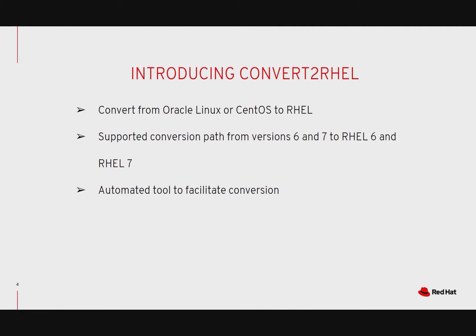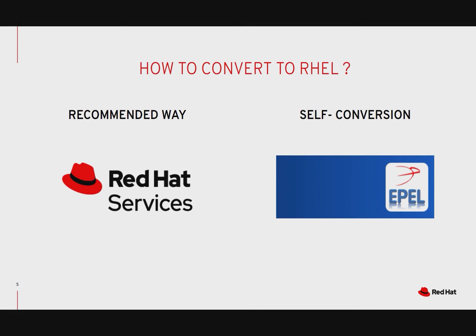The utility reduces the migration overhead and cost. Supported conversion paths are from CentOS or Oracle Linux 6 to Red Hat Enterprise Linux 6, and CentOS or Oracle Linux 7 to RHEL 7. When you're ready to migrate your systems onto RHEL, we recommend that you engage Red Hat services for a streamlined migration effort. Alternatively, you could self-convert by downloading the Convert to RHEL utility from the unsupported Extra Packages for Enterprise Linux repository, or EPEL repo. Pavel will now demonstrate how the Convert to RHEL utility works.